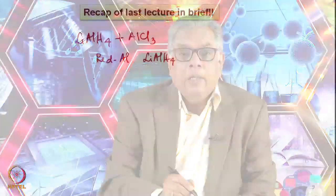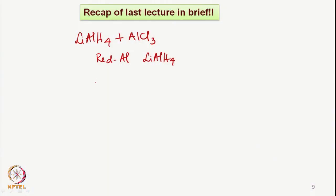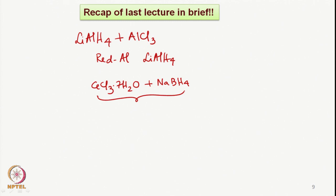Towards the end, we discussed Luche reduction. Luche and Gemal found out that cerium chloride heptahydrate, that means hydrated cerium chloride, along with sodium borohydride very comfortably gives a reducing system which allows reduction of carbonyl groups which are alpha, beta unsaturated — can be aldehyde or ketone — leading specifically to the corresponding allylic alcohol.